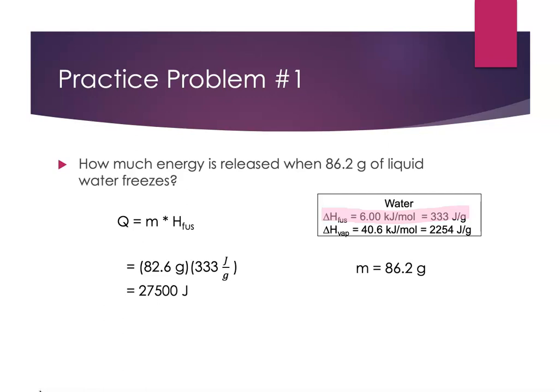Now I could say that this is being released and give it a negative sign. That's perfectly fine. Of course, just follow the sign convention here. Really, I'm just asking for the magnitude. 27,500 joules of energy are released.